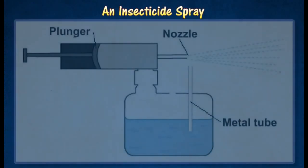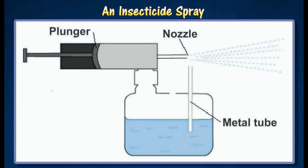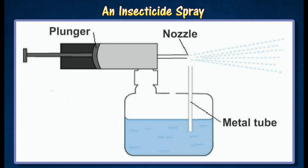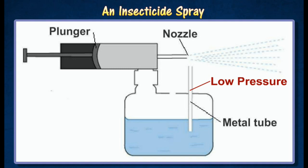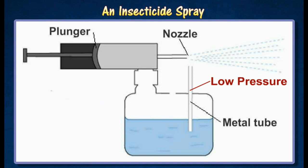When a piston is pushed into the cylinder, air gusts out at high speed through the narrow opening, producing a low pressure region around the opening. The air above the insecticide is at atmospheric pressure which is higher, so it pushes the insecticide to rise through the metal tube. The mixture of insecticide and air is then ejected as a spray of small droplets of insecticide.